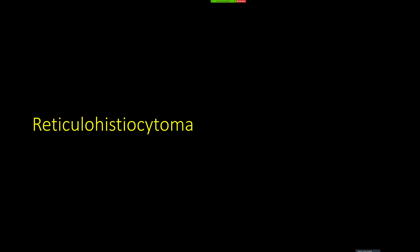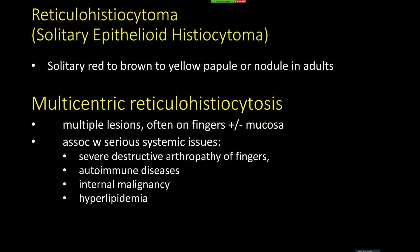Reticulohistocytoma is much less common than xanthogranuloma, but I like to include it right here because it looks a lot like xanthogranuloma. There are two forms. The solitary form, which some people call solitary epithelioid histiocytoma, is a kind of similar brownish reddish-yellow papule. It's solitary and it's a benign entity.